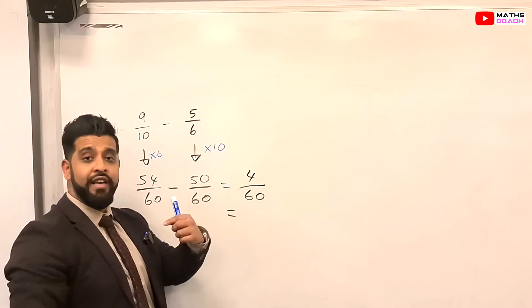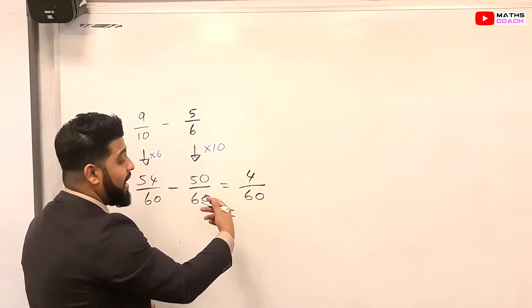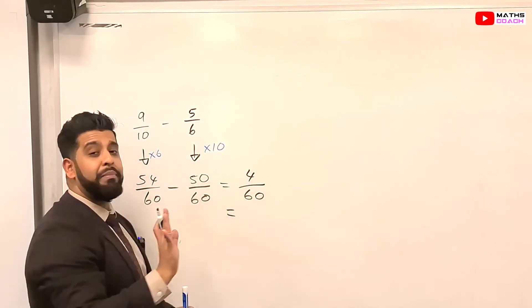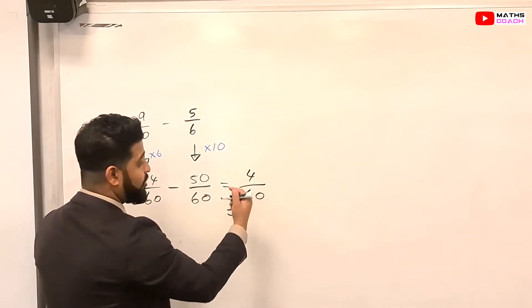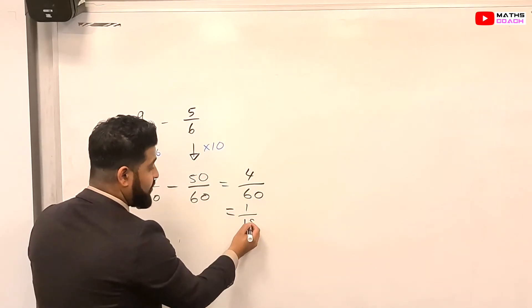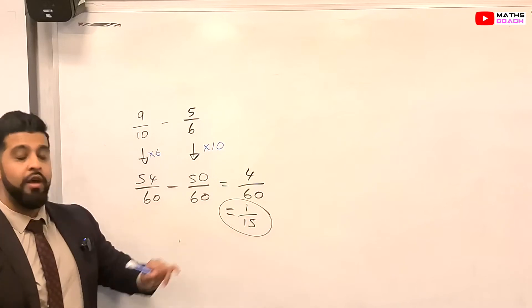Now, you can cancel down in two steps or you can do it in one step. Sometimes it's easier to do in two steps, which is to divide by 2 and then divide by 2 again. But if you're happy dividing by 4 straight away, you could do that. So 4 divided by 4 equals 1. 60 divided by 4 equals 15. So your answer is 1 over 15.